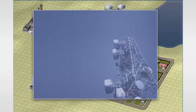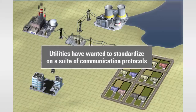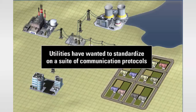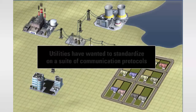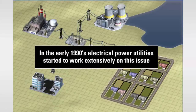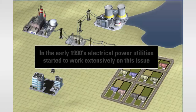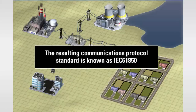For many years, utilities both in North America and abroad have wanted to standardize on a suite of communication protocols that would meet the communication requirements of the electrical utility industry. In the early 1990s, electrical power utilities started to work extensively on this issue. The resulting communications protocol standard is known as IEC 61850.